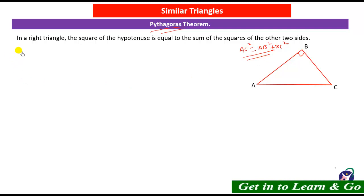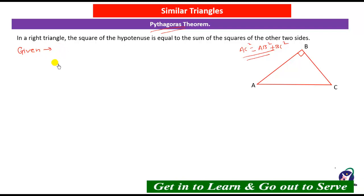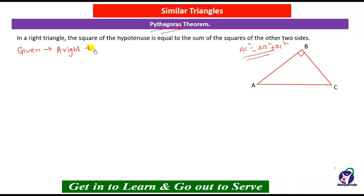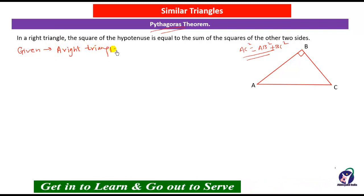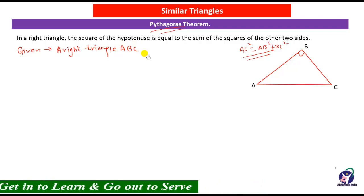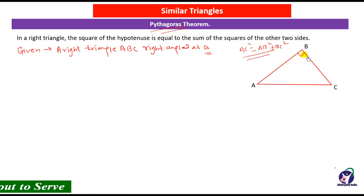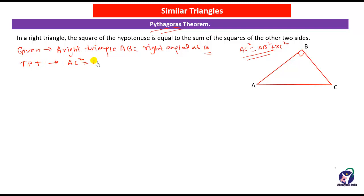So first we will write the given things. Given: a right triangle ABC, right-angled at B, meaning angle B is 90 degrees. To prove: AC² = AB² + BC².